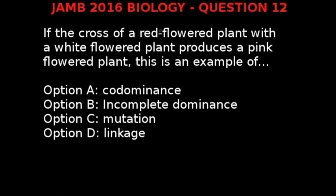From our question we have a red flowered plant, a white flowered plant, and finally a pink flowered plant. The red flowered plant was crossed with the white flowered plant. Rather than seeing either of them being dominant over the other, we find a third phenotype which is a pink flowered plant. This is a classic example of incomplete dominance.